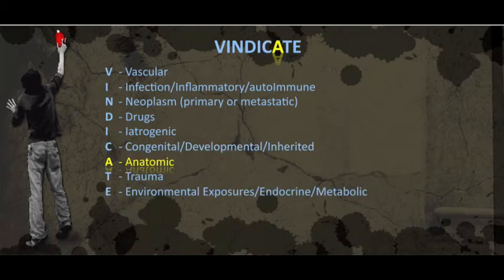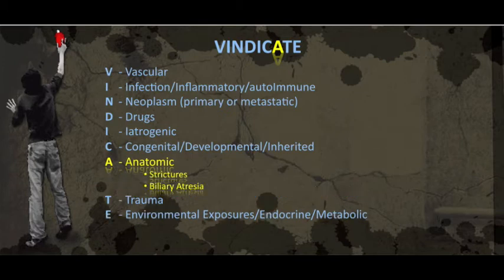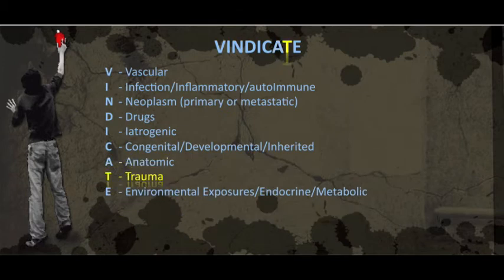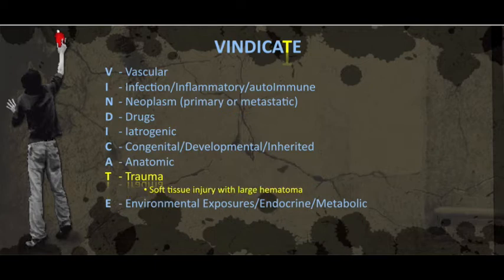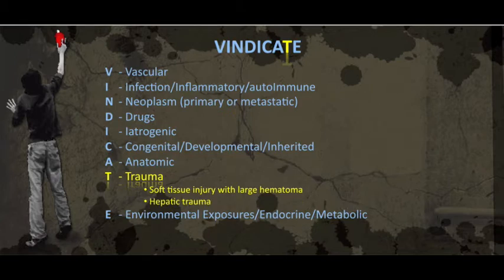The A is for anatomic. At this point, we're starting to see a lot of repeats because of the overlap. T is for trauma — soft tissue injuries resulting in large hematomas, and also hepatic trauma.